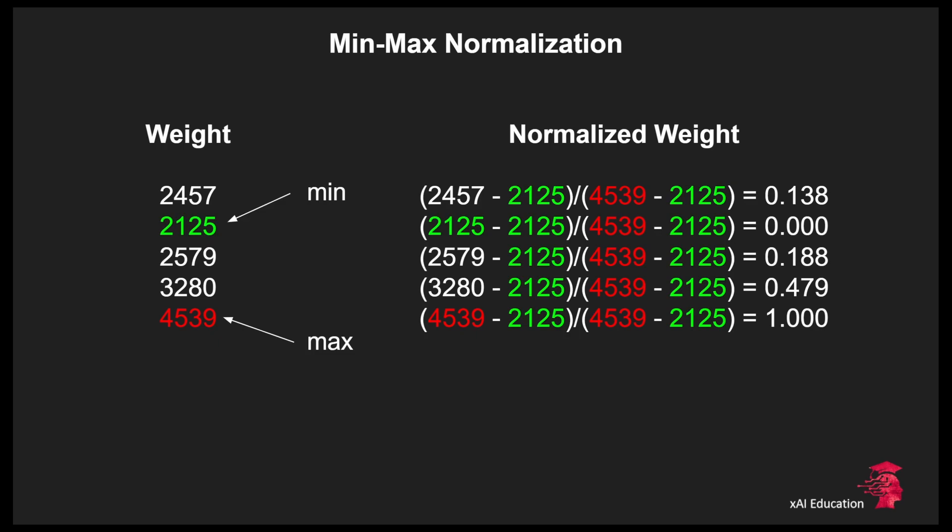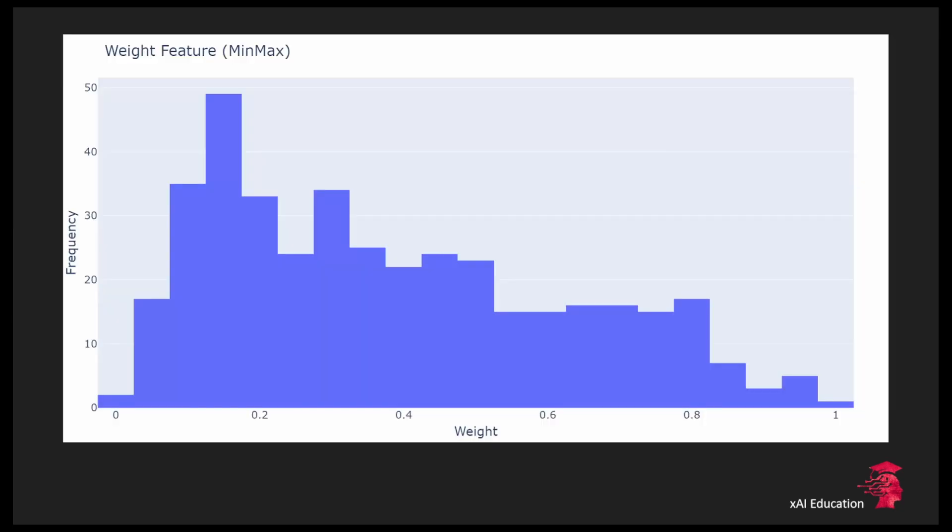If we apply this normalization technique to the weight feature that we have seen in the beginning we get the following distribution. As you can see all the values range between 0 and 1 and the shape of the distribution is very similar.